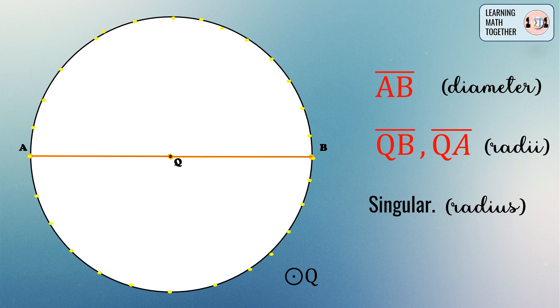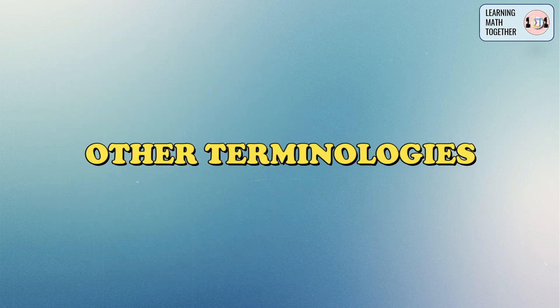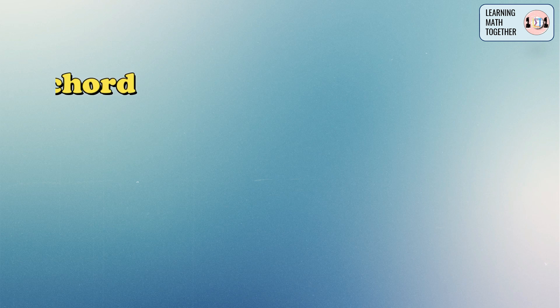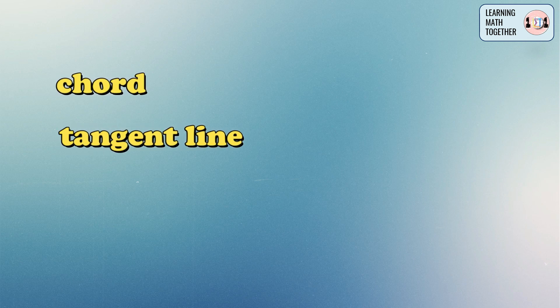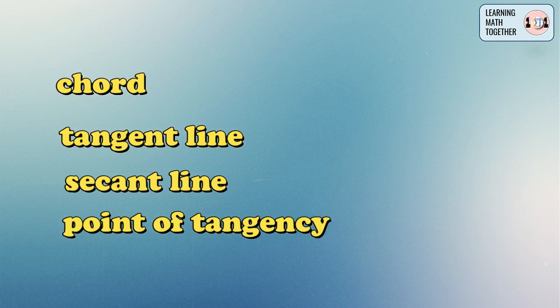As you can see, the measurement of our radius is actually half of the measurement of our diameter. We will be computing for the measurements of our radius and diameter later. Here are other terminologies that you will learn about circles: chord, tangent line, secant line, and point of tangency.